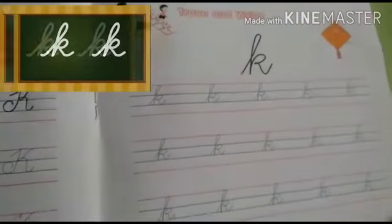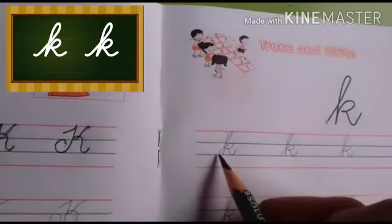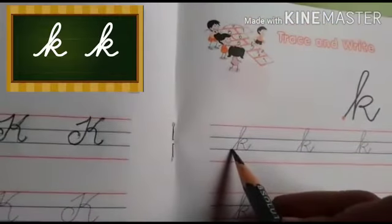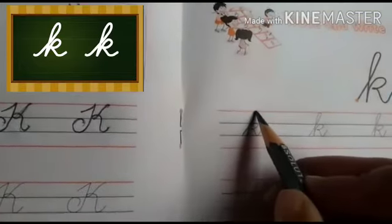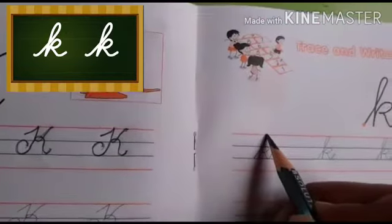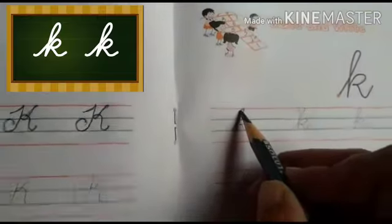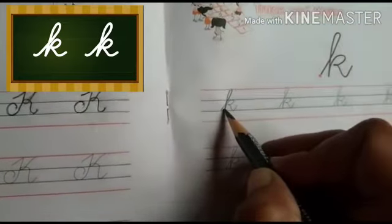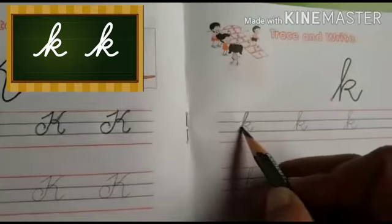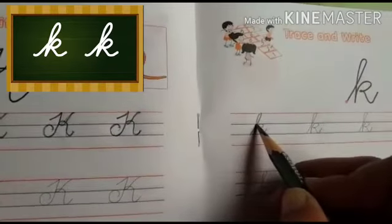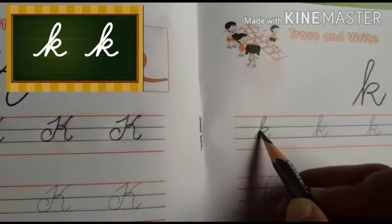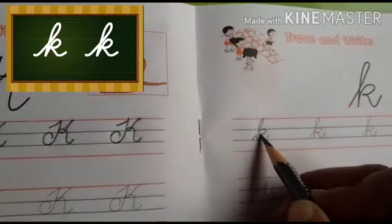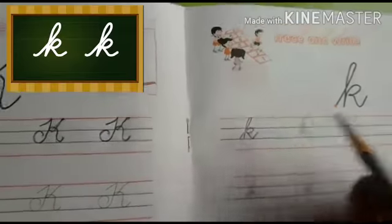Now next — small cursive K. Put your pencil point on the third line. Go up with a slant line and make a little loop. Come down to the third line, and little bit go up to the second line. Round, touch the point, and come down with a slant line and little bit go up.